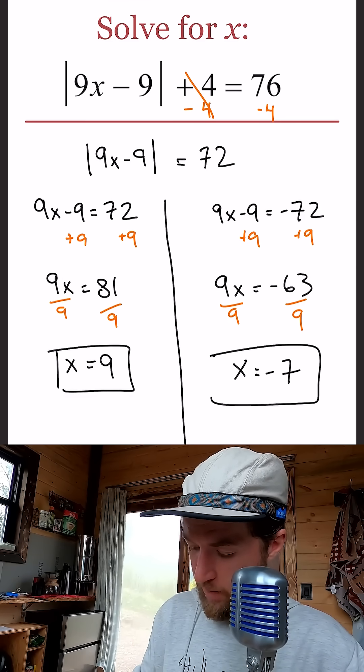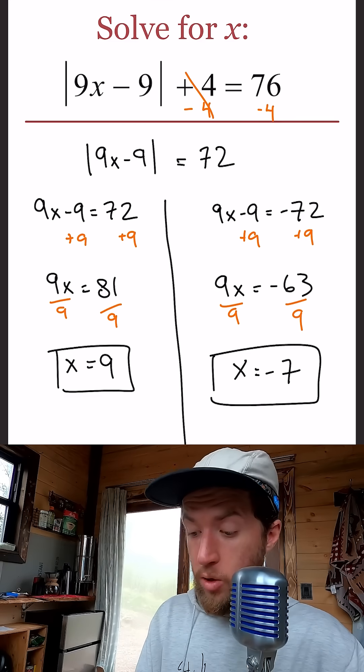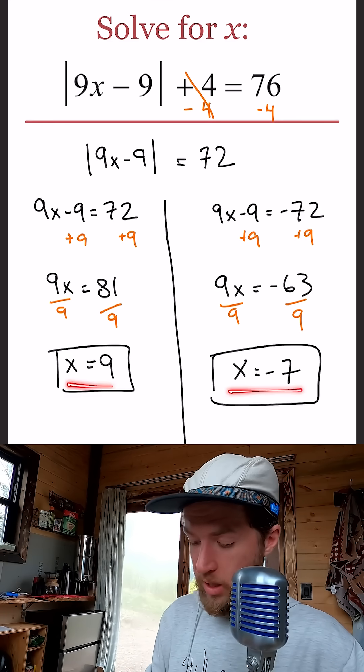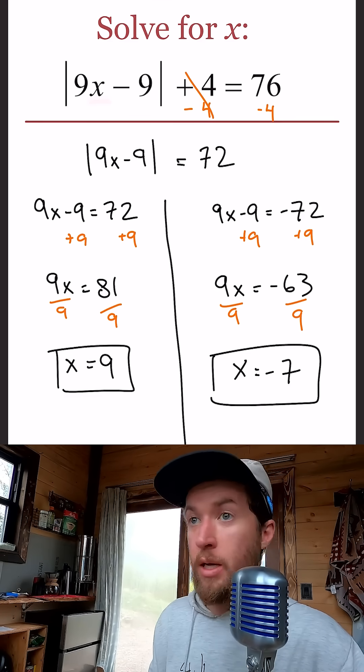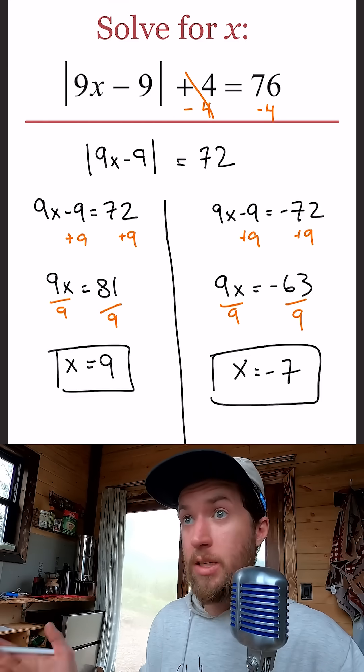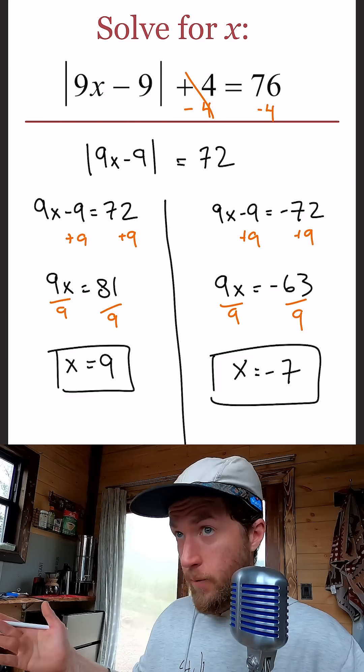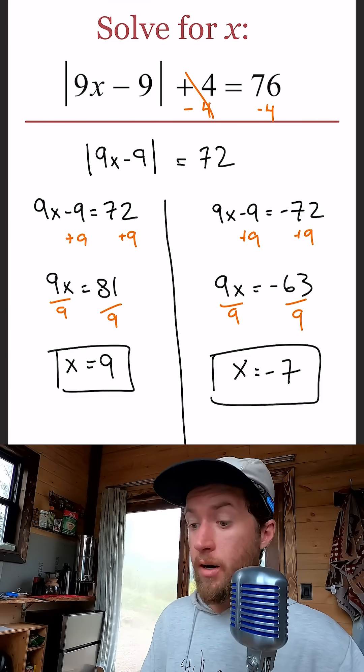We have two different answers, positive 9 and negative 7. I urge you, the viewer, to go plug both of those answers in for x individually and see if the math checks out. Does left equal right? Therefore, smiley face, A plus, gold star. On to the next.